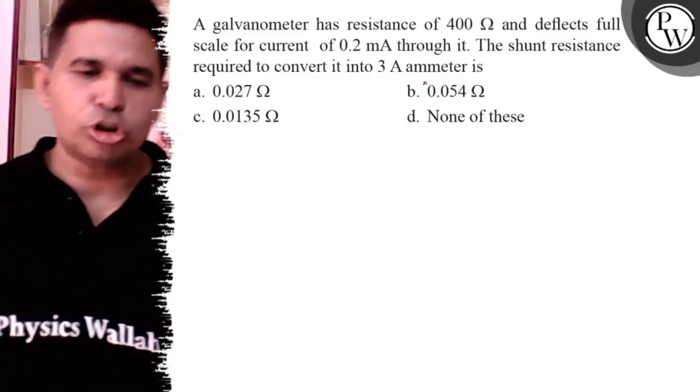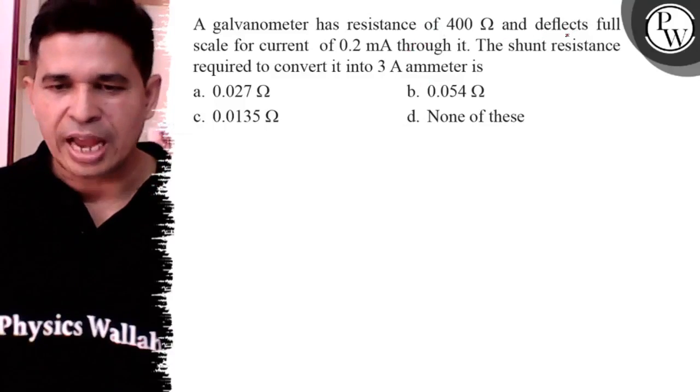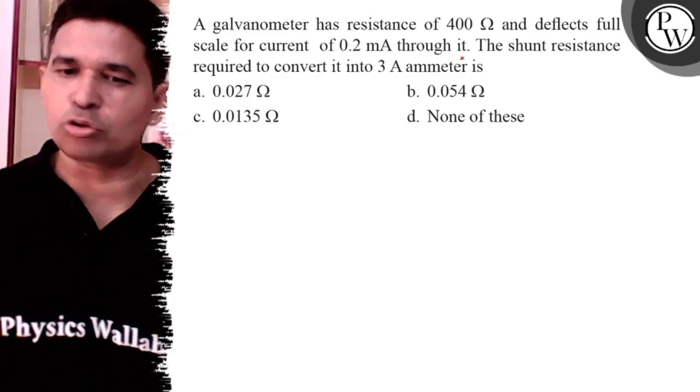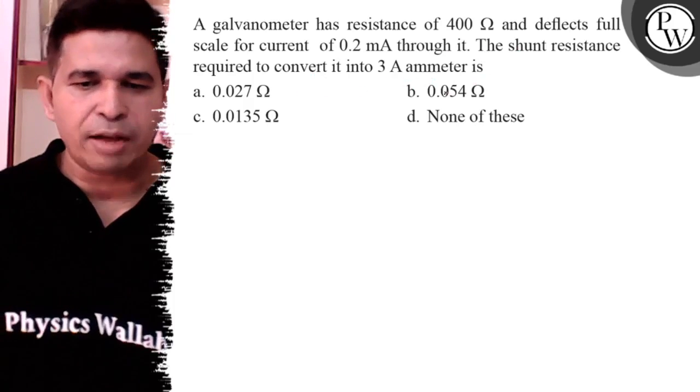Hello Bacho, let us see this question. A galvanometer has a resistance of 400 ohm and deflects full scale for current 0.2 mA through it. The shunt resistance required to convert it into 3 ampere ammeter.